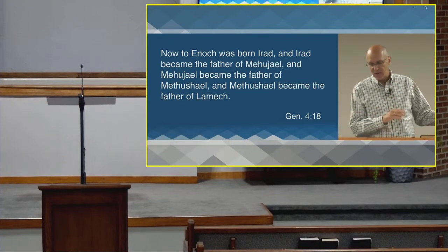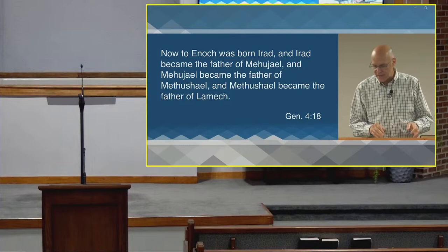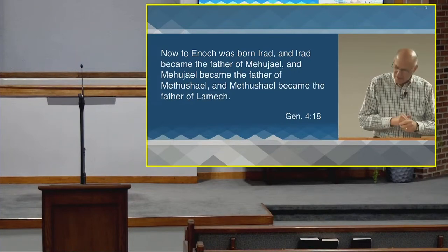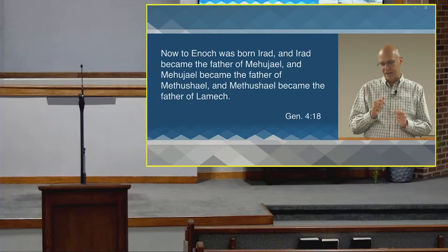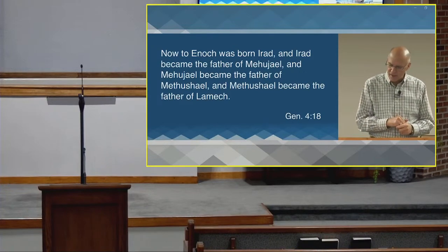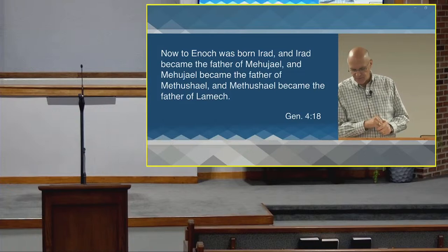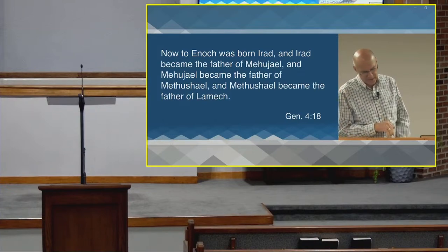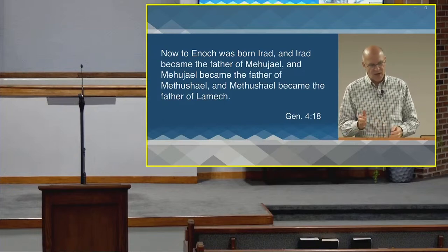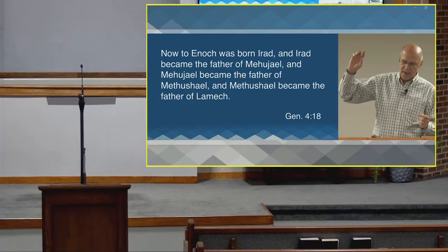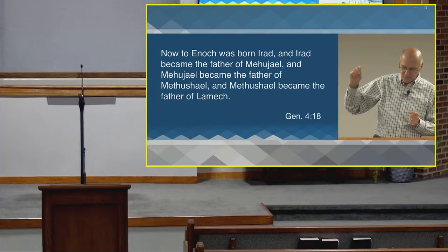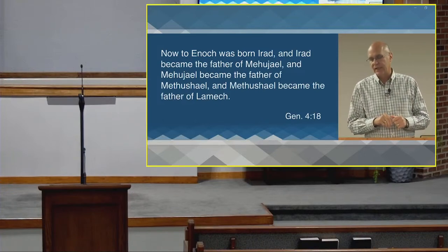Verse 18: 'To Enoch was born Irad, and Irad became the father of Mehujael. Mehujael became the father of Methushael. And Methushael became the father of Lamech.' So the Cain family line is described here to provide a time bridge to a man called Lamech, who is a significant person in Cain's lineage.